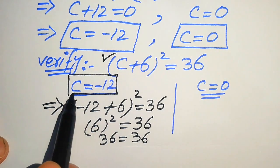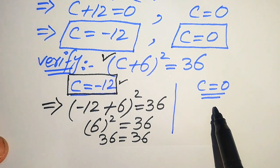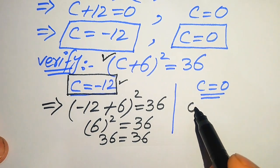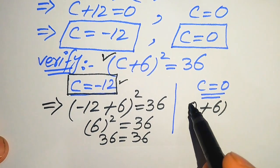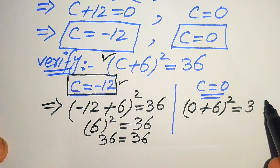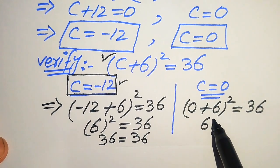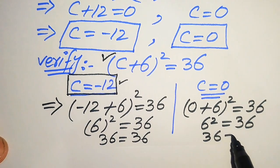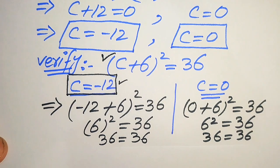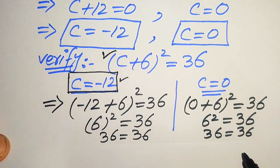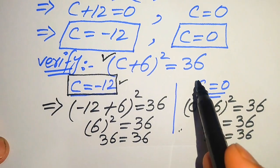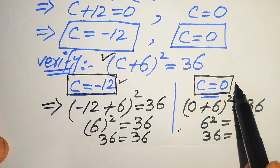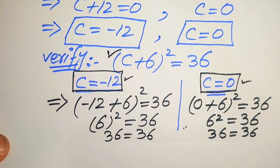Now we verify c = 0 by substituting it into the left hand side: (0 + 6)² = 6² = 36 = 36. This also satisfies the given equation. So these are the two solutions: c = 0 and c = −12. This is the final answer. Thank you so much for watching this video, please subscribe to my channel for more exciting videos.